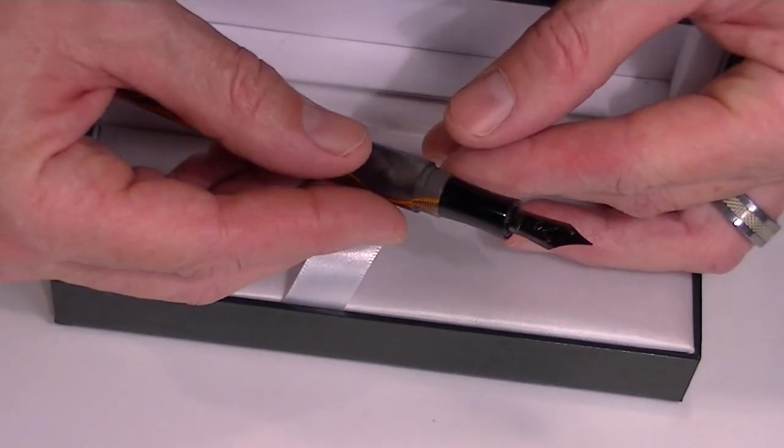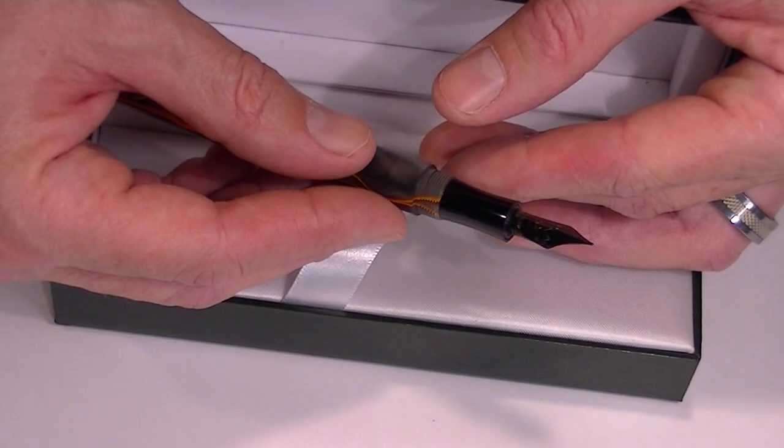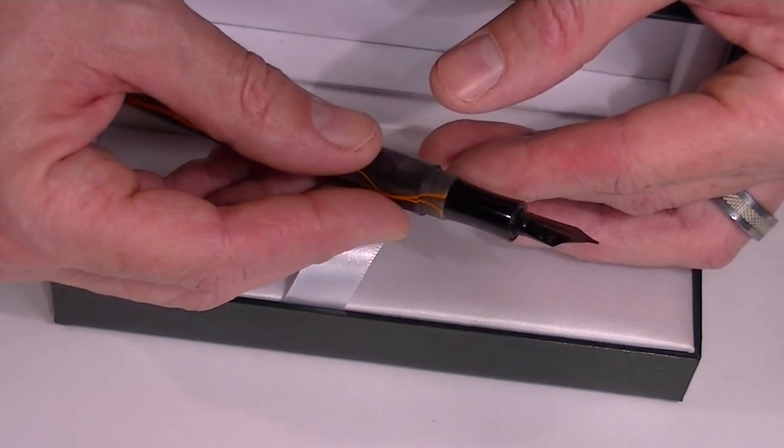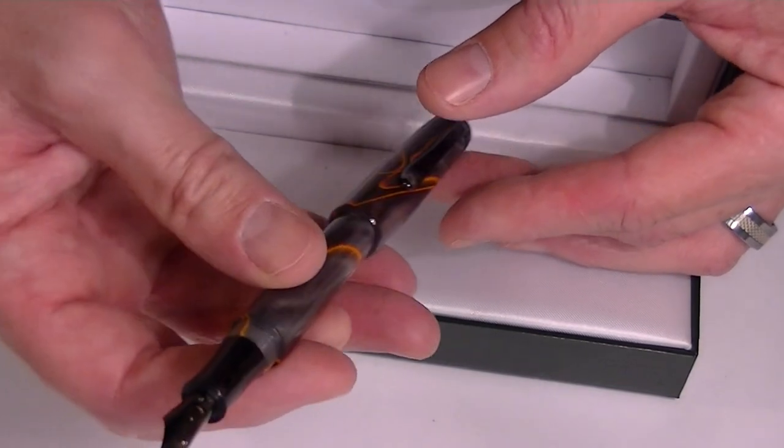The nib on this pen is quite large, it's a black nib, this happens to be a medium nib and it's got the Monte Verde logo etched into it as well as some other etchings.